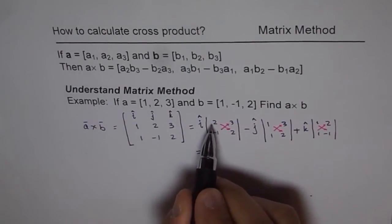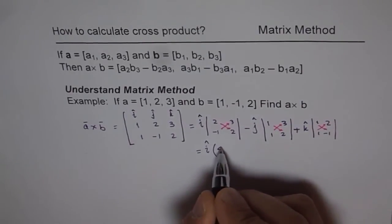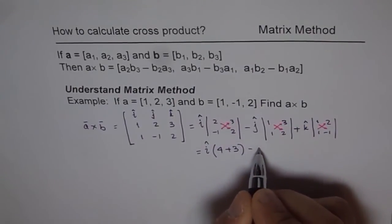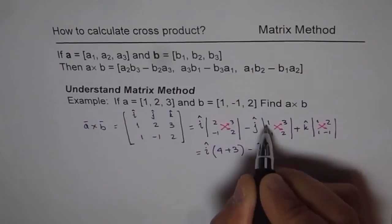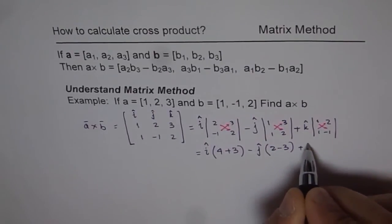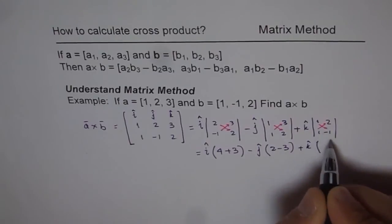Now here, we can write this as 2 times 2 is 4, and minus of this will give me plus 3. And this is j's, and it gives 2 minus 3.